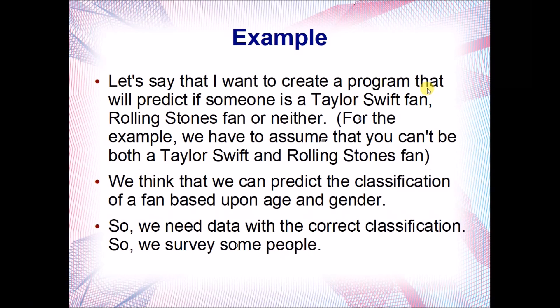Let's look at an example. Let's say I want to create a program that will predict if someone is a Taylor Swift fan, a Rolling Stones fan, or neither — so three groups. We assume you can't be in both groups. We think we can predict the classification of a fan based upon their age and gender. Maybe we're building a website where when people register, we know their age and gender and want to recommend music for them to listen to or purchase.